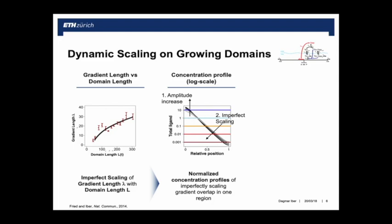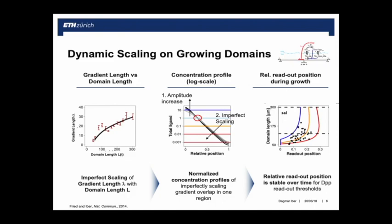As you can see, all the gradients cross in one point. That means in one part of the domain nothing changes. And that happens to be the part where Spalt and Dad, the two targets of DPP signaling, are read out. You can only read out the DPP gradient where you need it. Nature wasn't perfect but good enough to get stuff done. That's what we suggest as a mechanism of scaling in the Drosophila wing disc.